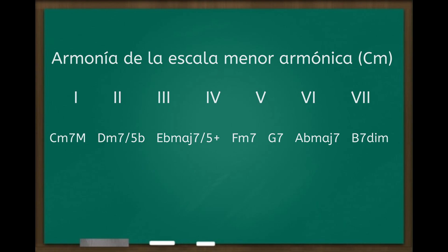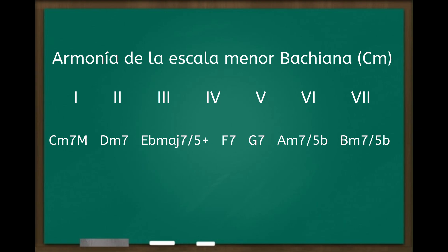Por último, vamos a la armonía que genera la escala menor bachiana de do menor. En el primer grado: do menor séptima mayor. En el segundo grado: re menor séptima. En el tercer grado: mi bemol séptima mayor con quinta aumentada. En el cuarto grado: fa séptima. En el quinto grado: sol séptima. Fíjense que esta escala tiene dos acordes de séptima dominante. En el sexto grado: la semi disminuido. Y en el séptimo grado: si semi disminuido.